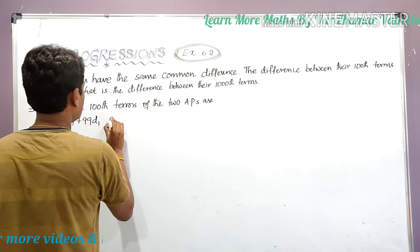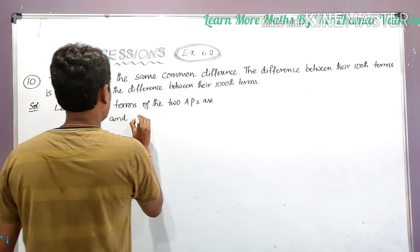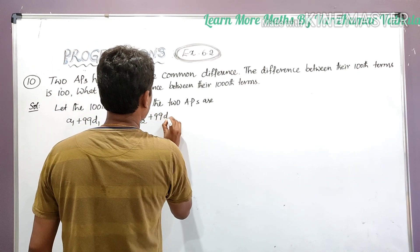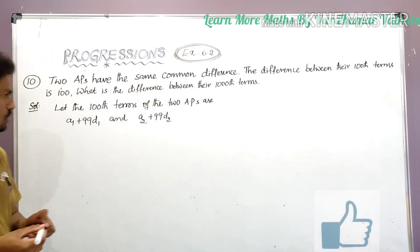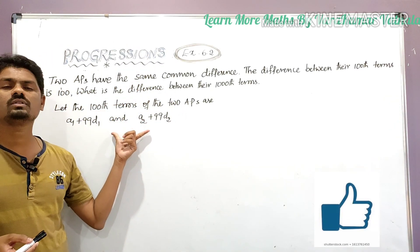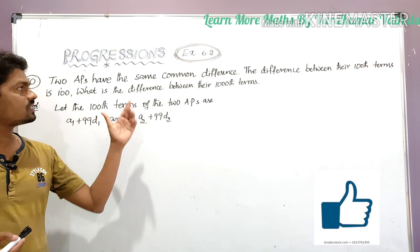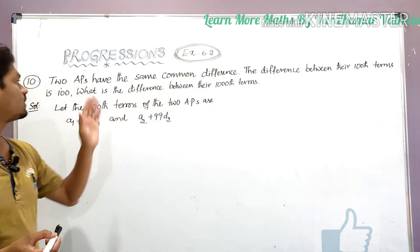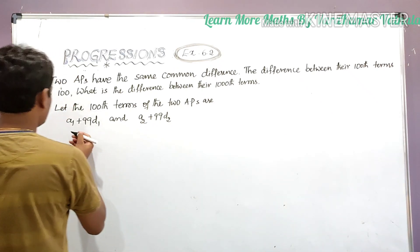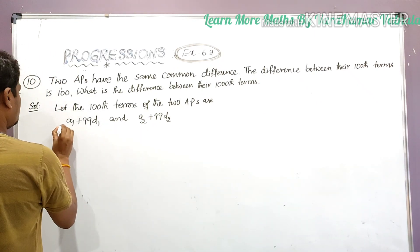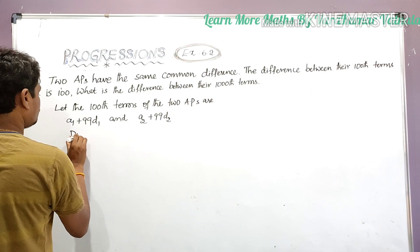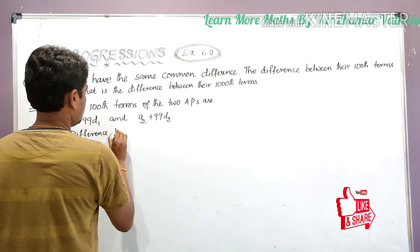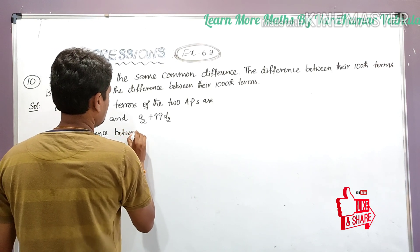So the hundredth terms of the two APs are: a1 plus 99d1, and a2 plus 99d2. He has given that the difference between their hundredth terms is 100.